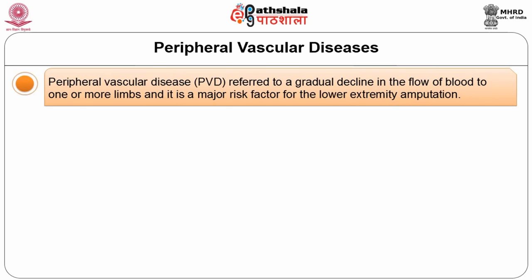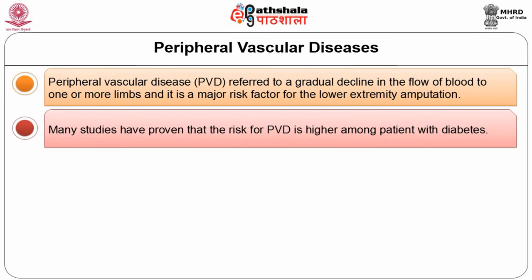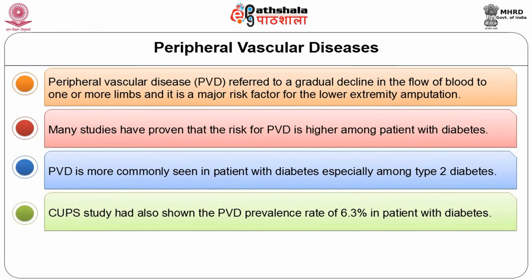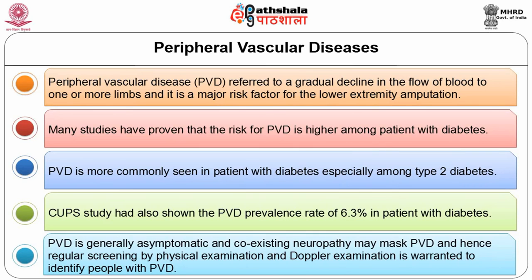Peripheral vascular disease is another macrovascular complication, referring to gradual decline in blood flow to one or more limbs. It is a major risk factor for lower extremity amputation. Studies have proven higher PVD risk among diabetic patients. The Chennai Urban Population Study showed a prevalence rate of up to 6.3%. PVD is generally asymptomatic and coexisting neuropathy may mask it, so regular screening by physical examination and Doppler is warranted.